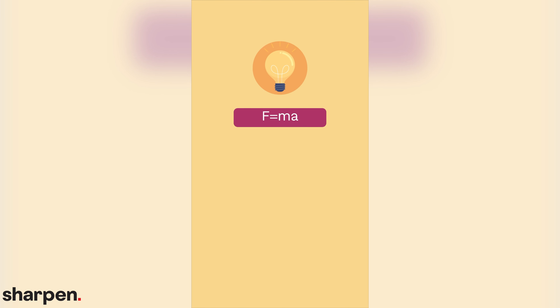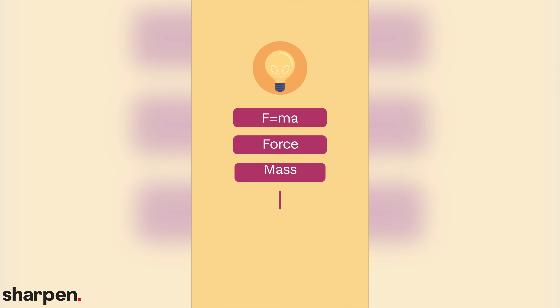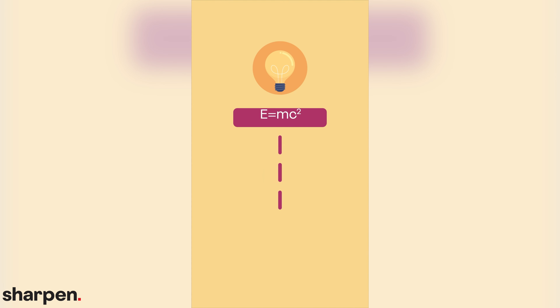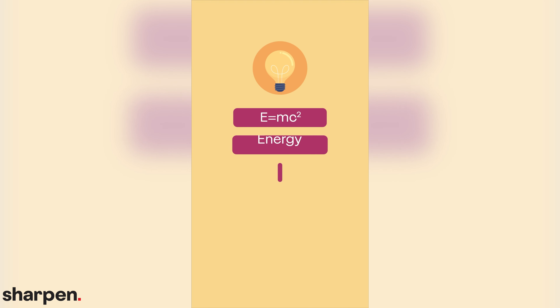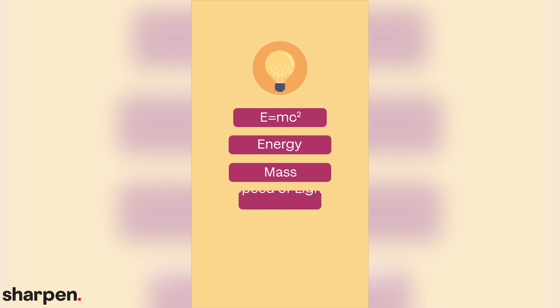These concepts have also influenced famous formulas, such as F equals MA, which describes the relationship between force, mass, and acceleration, and E equals MC squared, which represents the connection between energy, mass, and the speed of light.